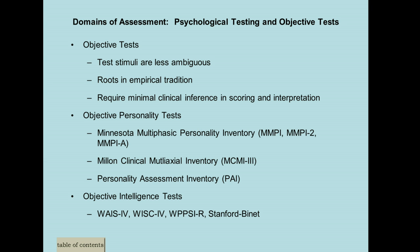Other objective tests are personality tests, which are really valuable in giving you a snapshot of an individual's personality. There are three tests commonly used: the MMPI, the Millon Clinical Multiaxial Inventory or MCMI, and the PAI. We're going to talk about each of these personality tests.